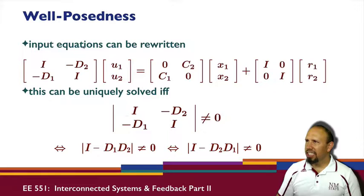So well-posedness, which is kind of an odd expression, basically relates to whether or not all of this makes sense. And so if this matrix is invertible, that's equivalent to this matrix being invertible, which is equivalent to this matrix being invertible. And so all three of those are related.